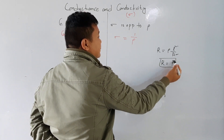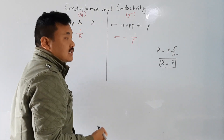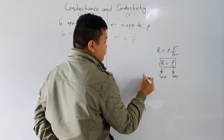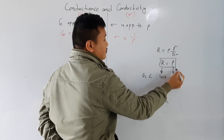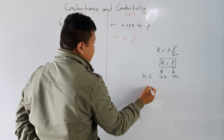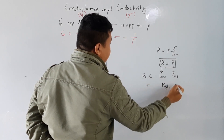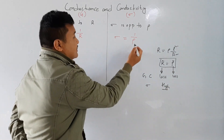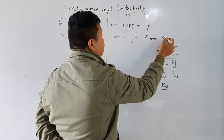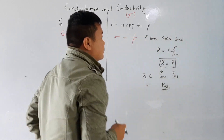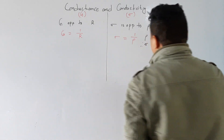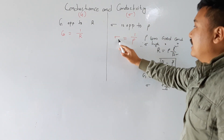For a good conductor, resistance should be less and resistivity should also be less. If resistivity rho is less, then sigma, that is conductivity, should be high. If rho is very less, then sigma will automatically become large because of the inverse relation. So rho less means good conductor, and therefore sigma large is also good conductor.